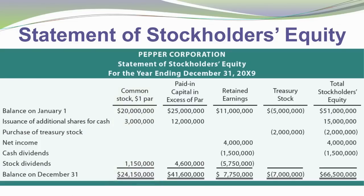There's also a column for Paid-In Capital in Excess of Par, a column for Retained Earnings, a column for Treasury Stock, and then a column for Total Stockholders' Equity, which is a summation of the effects coming across. Let me call your attention next to the Retained Earnings column.